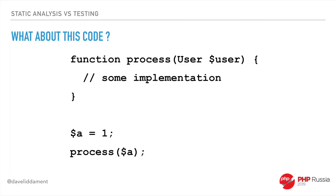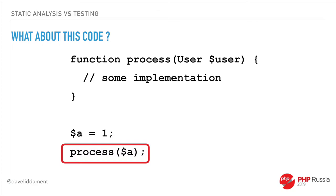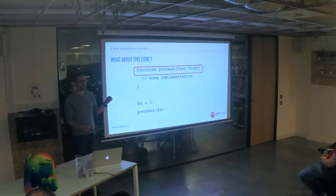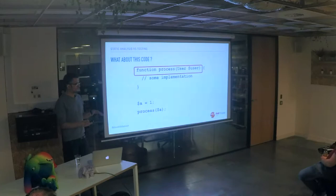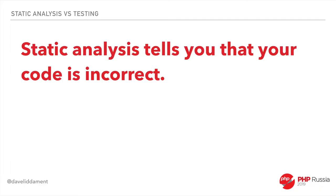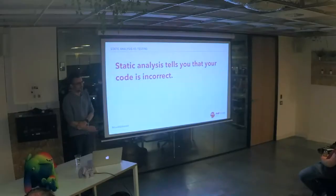What about this code? Again, we've assigned $a the integer value 1, we're calling process passing that integer value 1, and we can see that the function process in this case is expecting something of type User. So we know that this code will never work. If we ran this code as is and it hit this line, you will get a fatal error. So static analysis tells us that our code is incorrect.